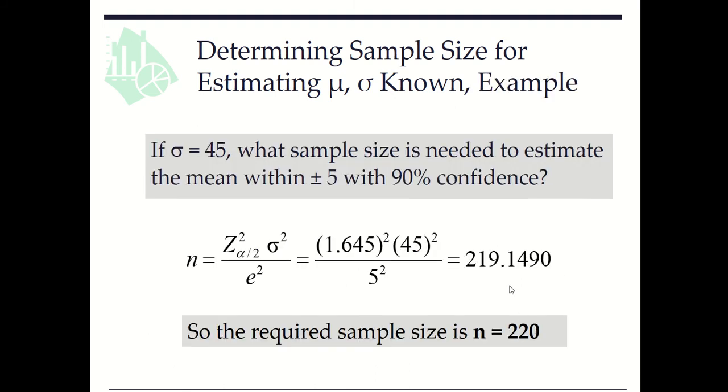For example, if σ = 45, what sample size is needed to estimate the mean within ±5 with 90% confidence? We can plug in the given values into the formula to find n = 219.1490 roughly. We need to round this value up, so the required sample size is n = 220.